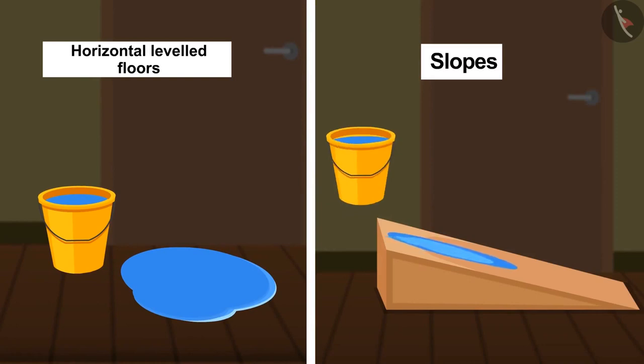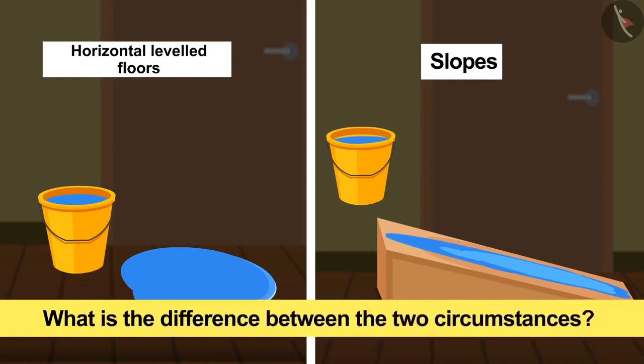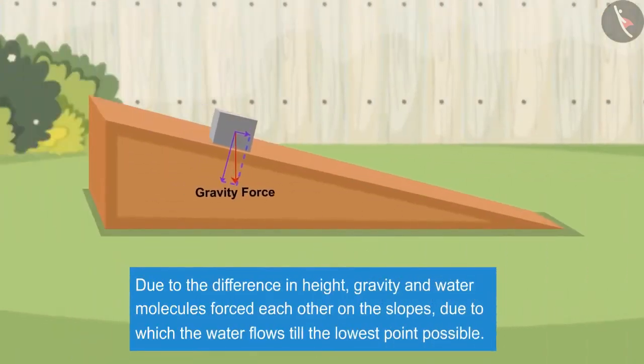So what is the difference between these two circumstances? Yes, you get it right: height. Due to the difference in height, gravity and water molecules force each other on the slopes, due to which the water flows to the lowest point possible.